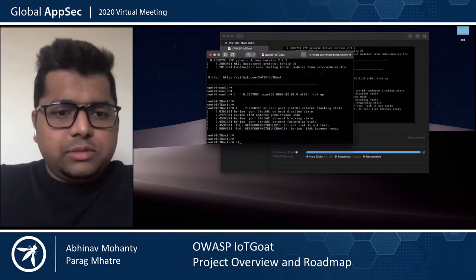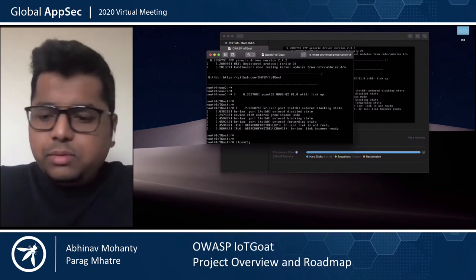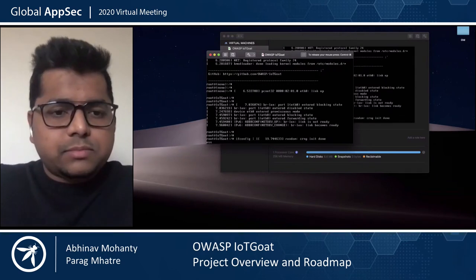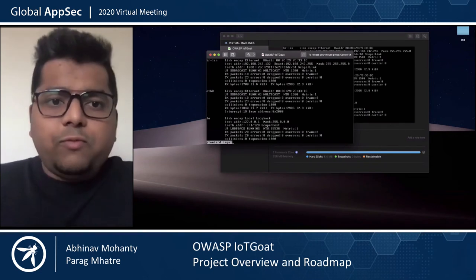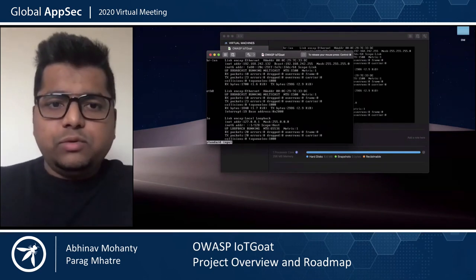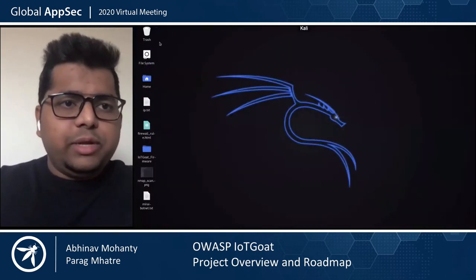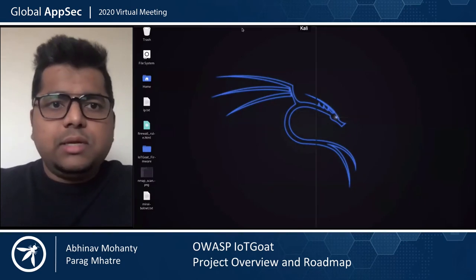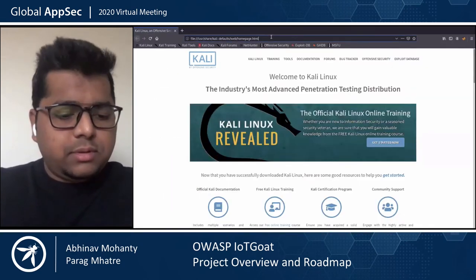Let's check the IP address of the instance. We have 192.168.242.132. I'm just going to make sure that we do have access to the UI and are able to connect to it.